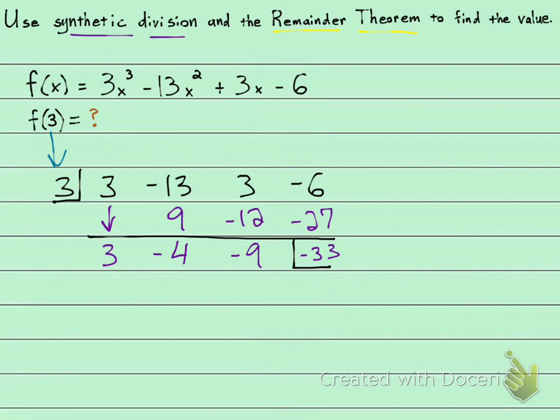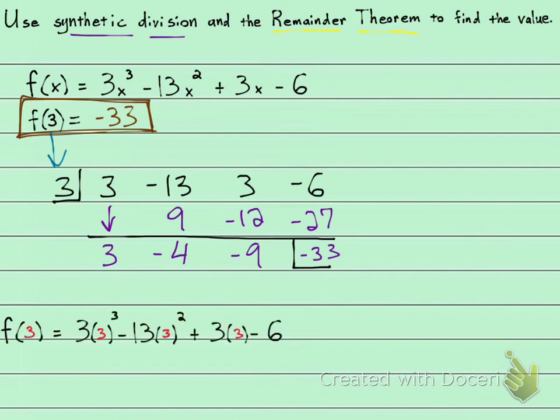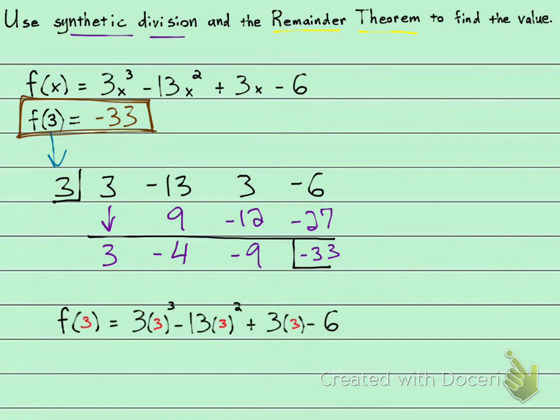And that's what the remainder theorem is. It says that if you do synthetic division and you get a remainder, in this case it's negative 33, that is the same answer as if you would evaluate by plugging in. Okay, so maybe that's an exercise for you. You can do this right here and plug in that 3 and see that you get negative 33.